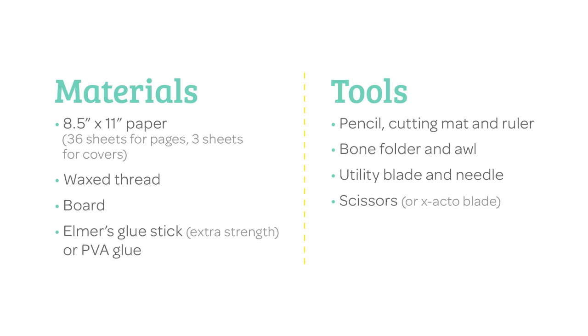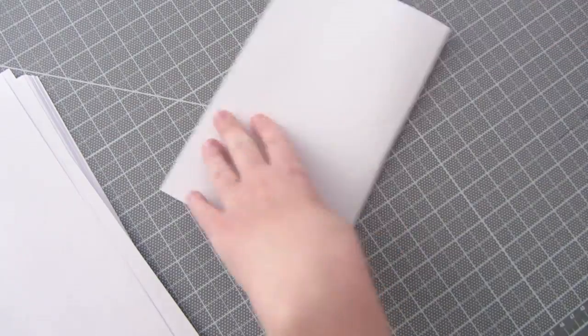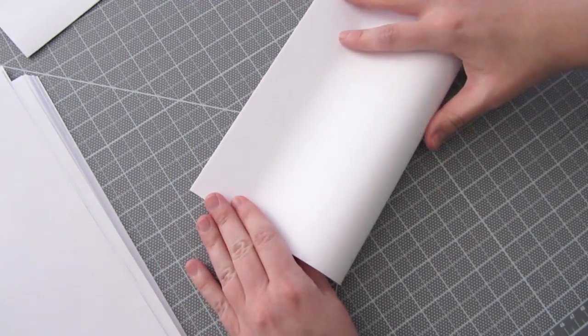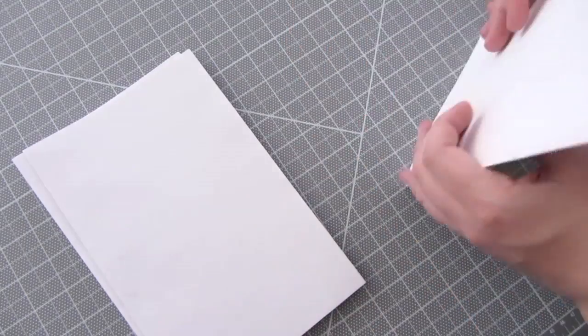Here's a list of materials and tools I'll be using. First off, I'm going to fold all my paper in half and run the bone folder across the folded edge. And then stack the pages in groups of four to make signatures.